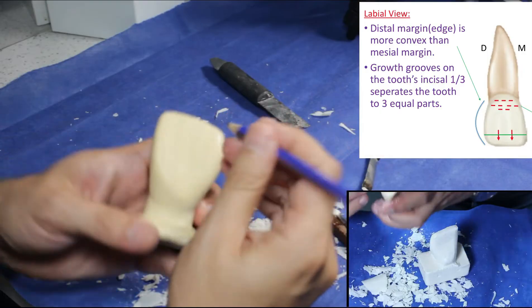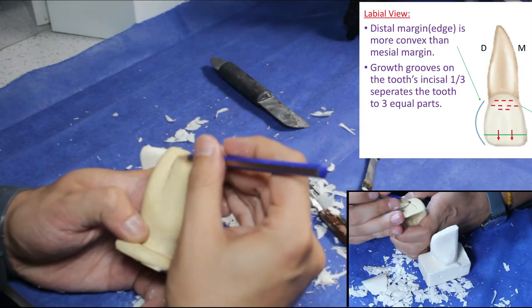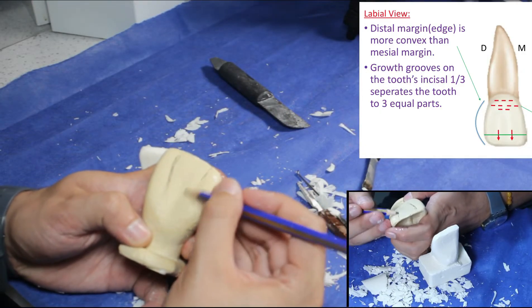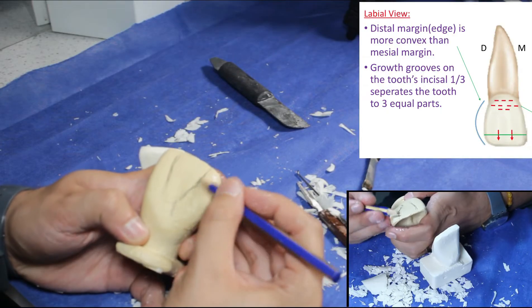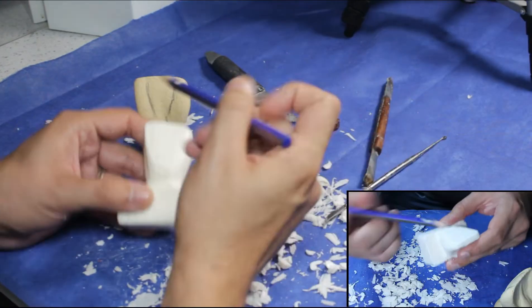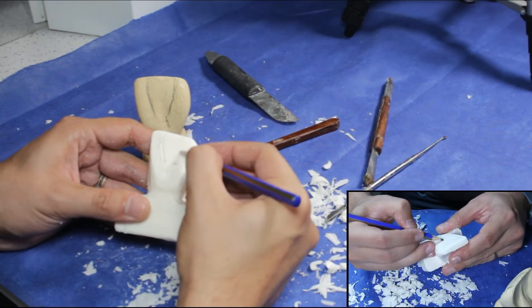Later on, we will shape growth grooves on the tooth's incisal one-third, which separate the tooth into three equal parts. After marking them, a blunt side of the wax knife is used for carving.